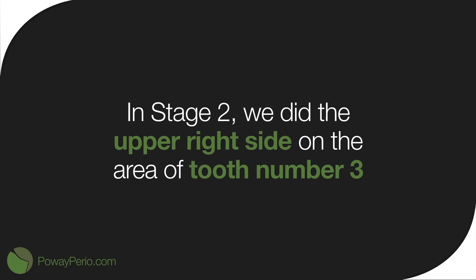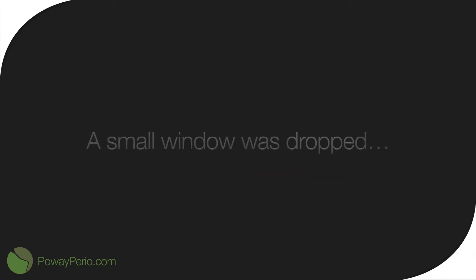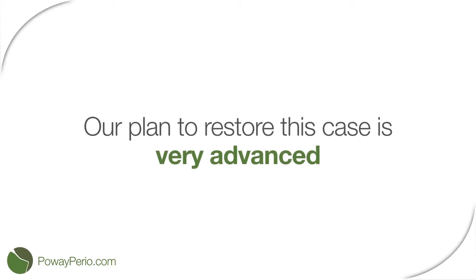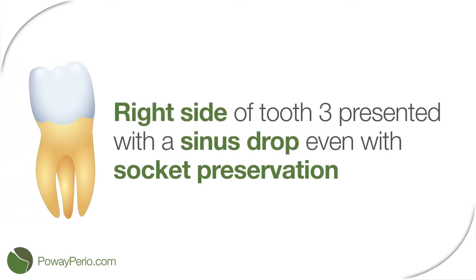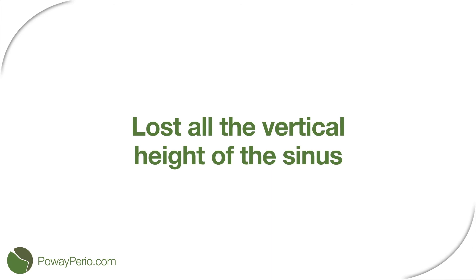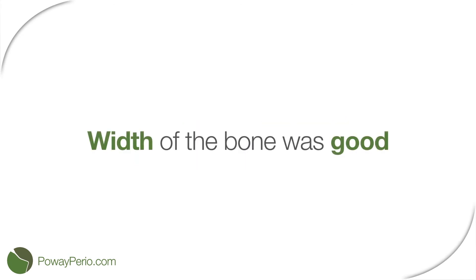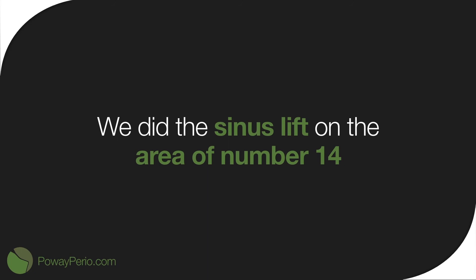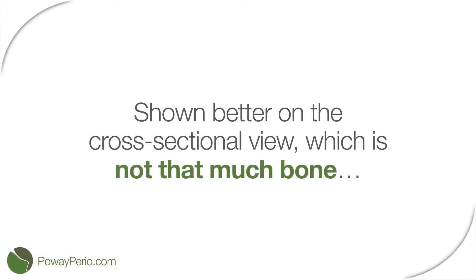For stage 2, we did the upper right side on the area of tooth number 3. A small window was created on the side and we gained about 14 mm of height on the area of tooth number 3 to place the proper implant site. This is our plan to restore this case — it's a very advanced case. This is the right side tooth number 3 which presented with sinus drop. Even with the socket preservation, we lost all the vertical height of the sinus. The width of the bone was good, and in the area of teeth number 5 and 7 we had good vertical and horizontal bone height. We did the sinus lift on the area of number 14, which is shown better on the cross-sectional view.